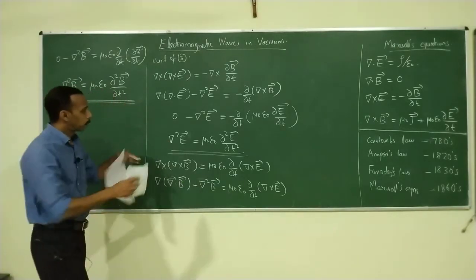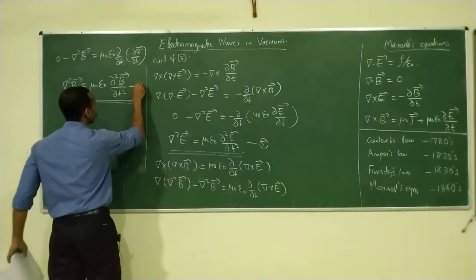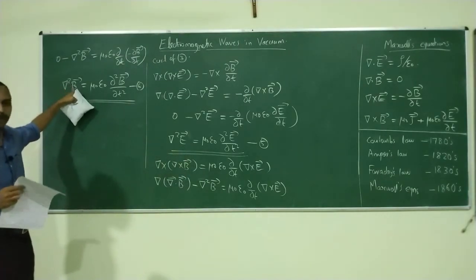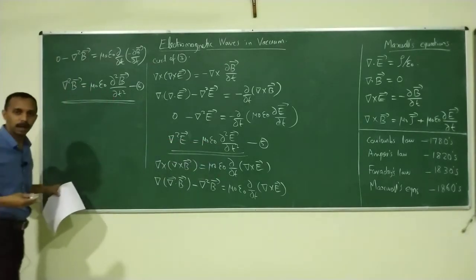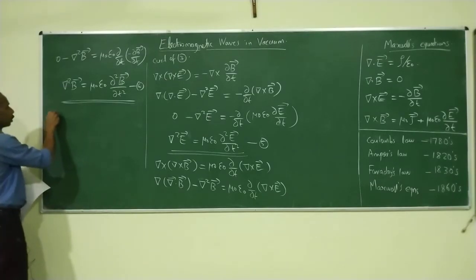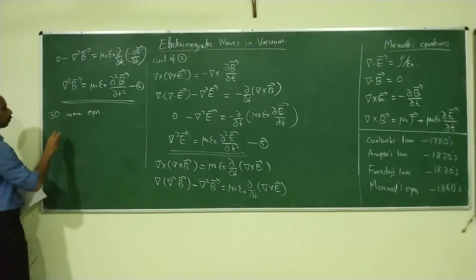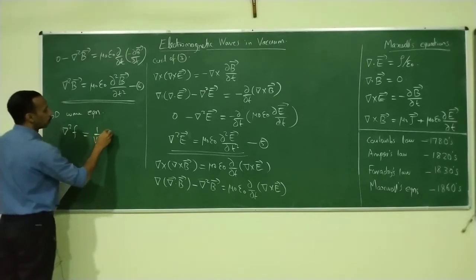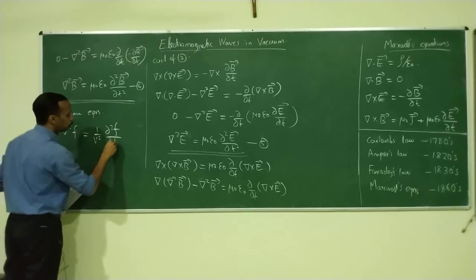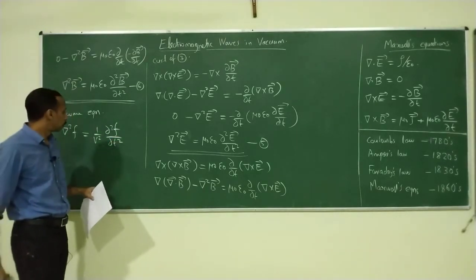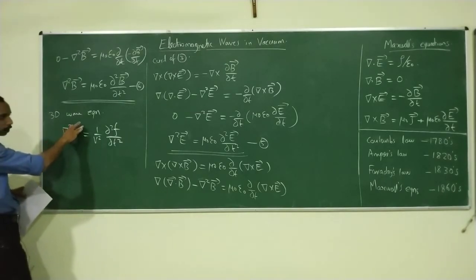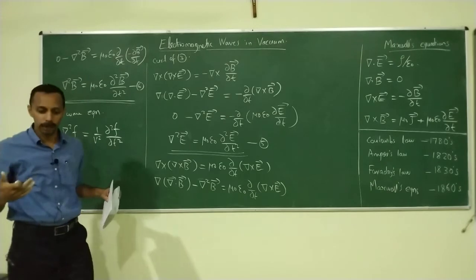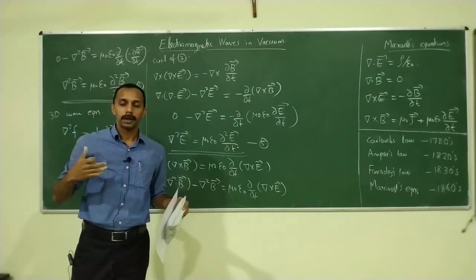Let these be equation 5 and equation 6. You can immediately identify that equations 5 and 6 are the wave equations for electric and magnetic fields. Comparing with the general three-dimensional wave equation — Laplacian f equals (1/v²) dou squared f by dou T squared — equations 5 and 6 show that electric and magnetic fields can propagate as a wave in vacuum.